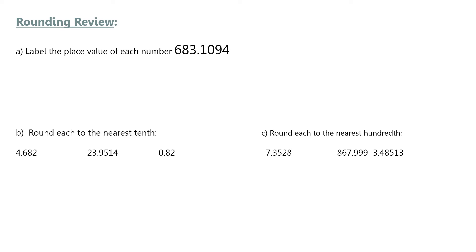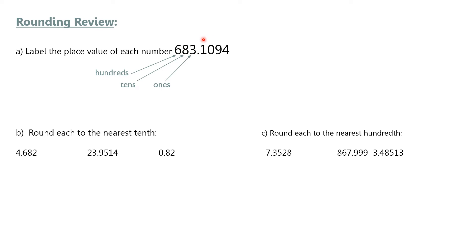Let's do some rounding review. Label the place value of each number. Look at this number here: 683.1094. We need to know the proper vocabulary for these. So the six is in the hundreds position, eight is in the tens position, three is in the ones position. People don't usually have a problem with these.